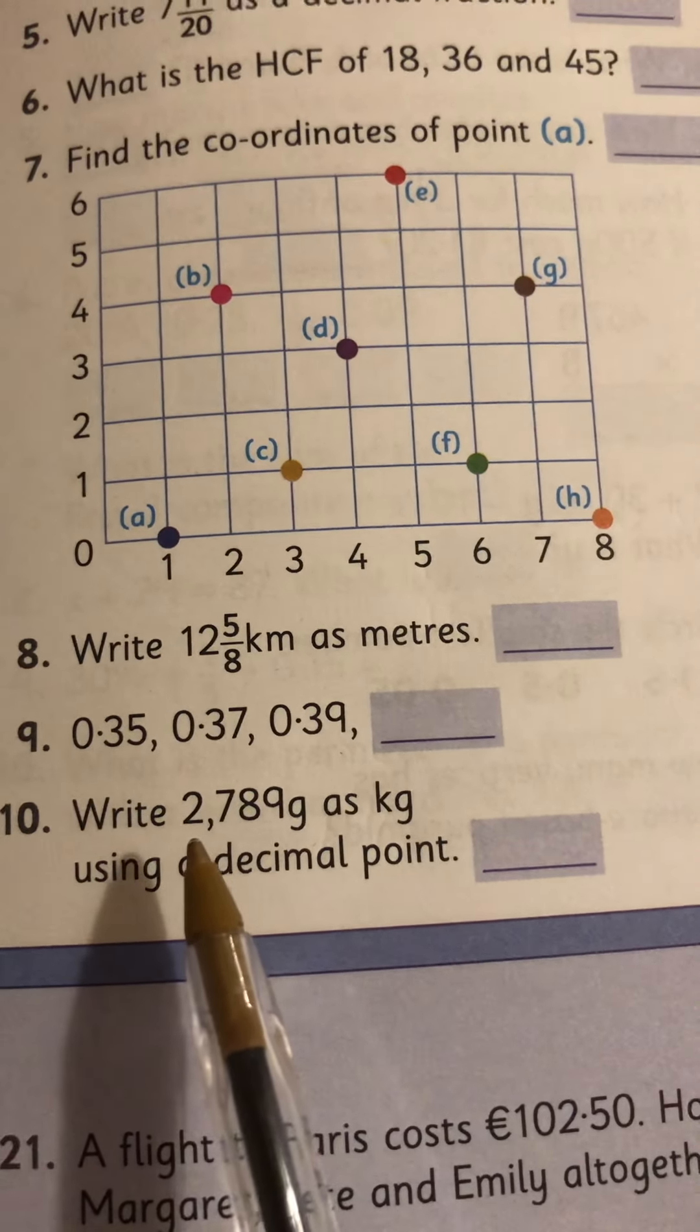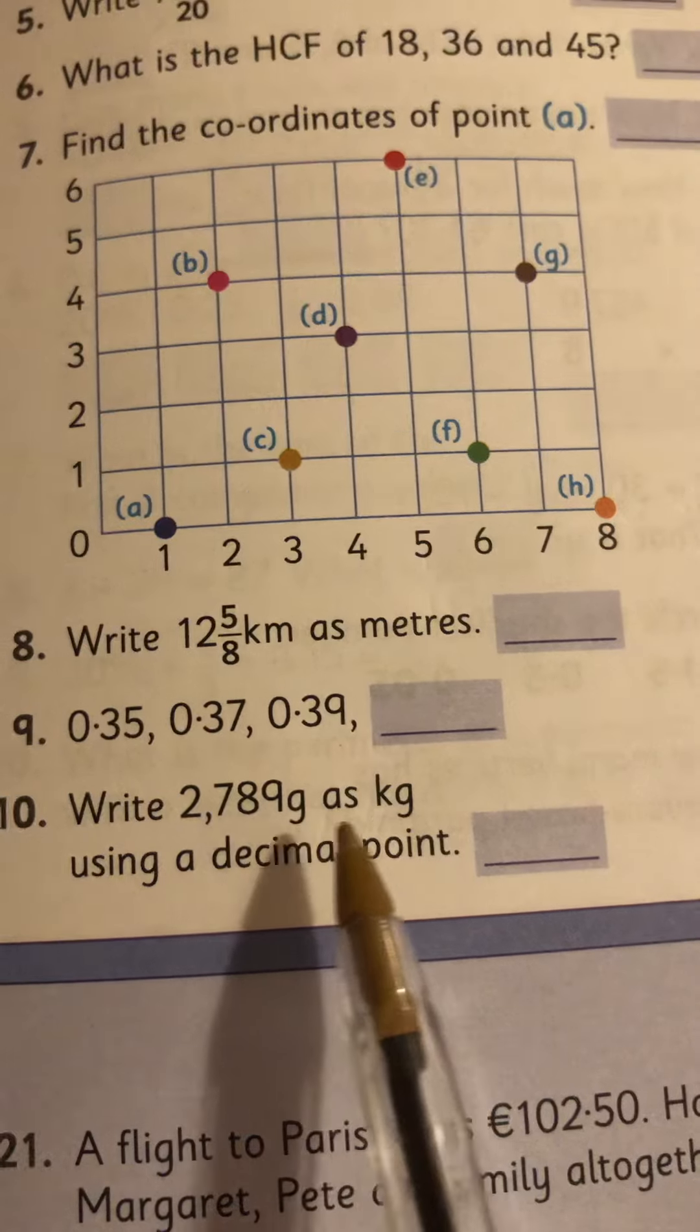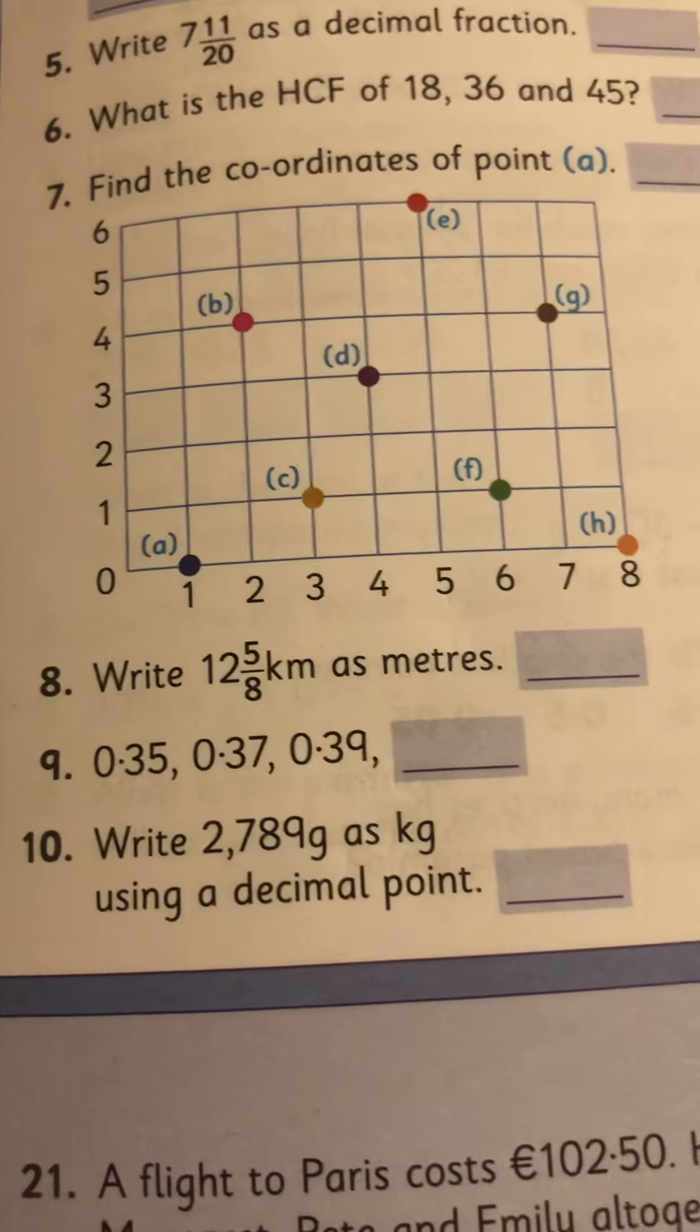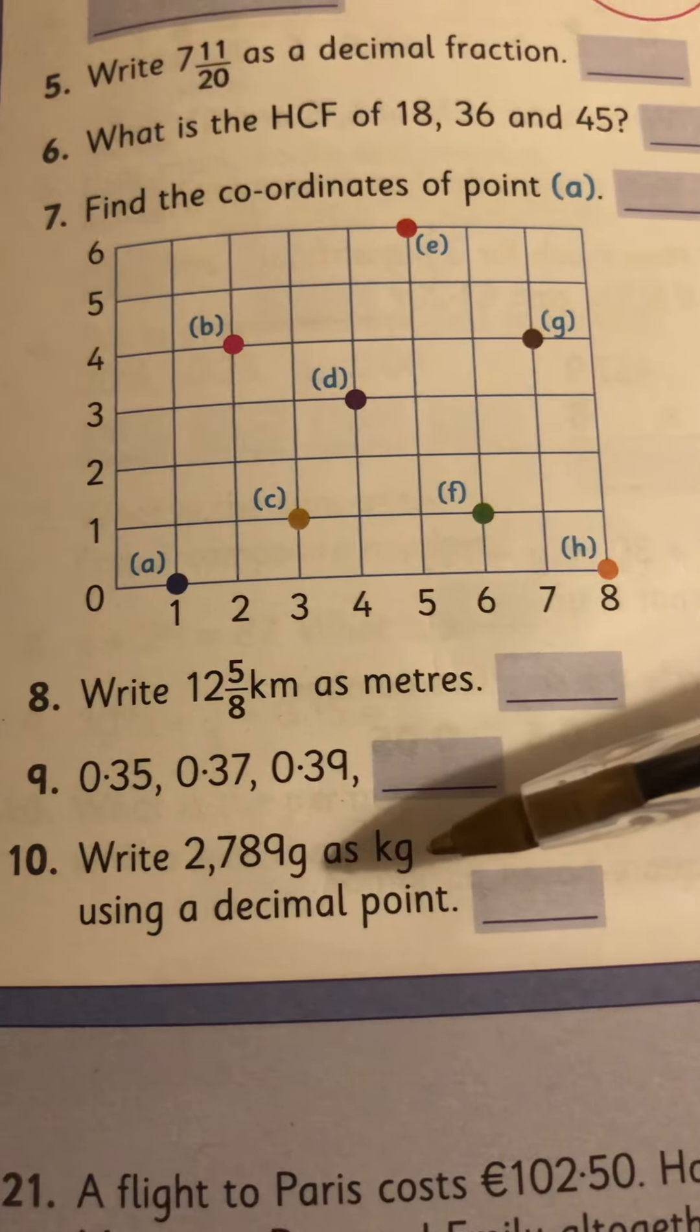Number 10, write 2,789 grams as kilograms using a decimal point. So again, how many grams per kilogram?